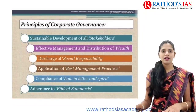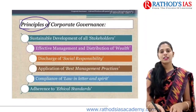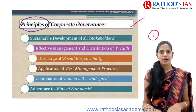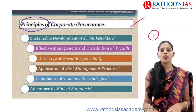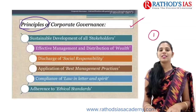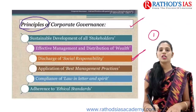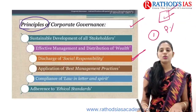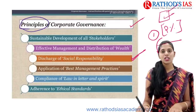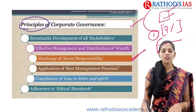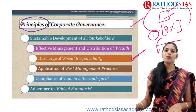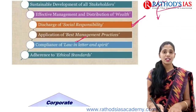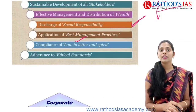Now let us look at the principles of corporate governance. First, whoever the stakeholders are involved, they need to focus on sustainable development of all stakeholders. Next, they need effective management of the corporation, distribution of wealth, and following social responsibility. For example, any corporate crossing the limits of profit needs to spend at least 2% as corporate social responsibility — for example, in education or sanitation. They also need to follow best management practices, follow law in letter and spirit, and adapt to ethical standards.